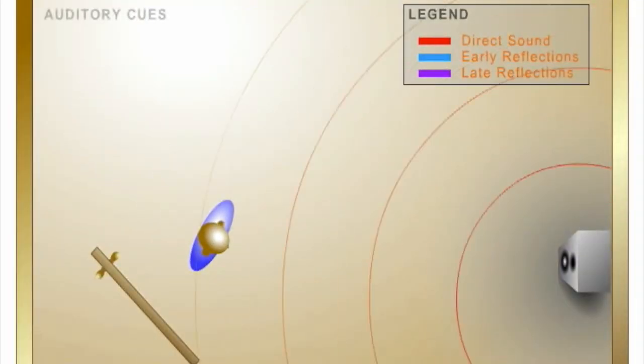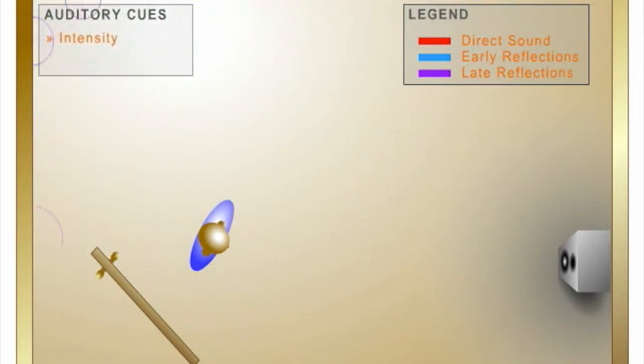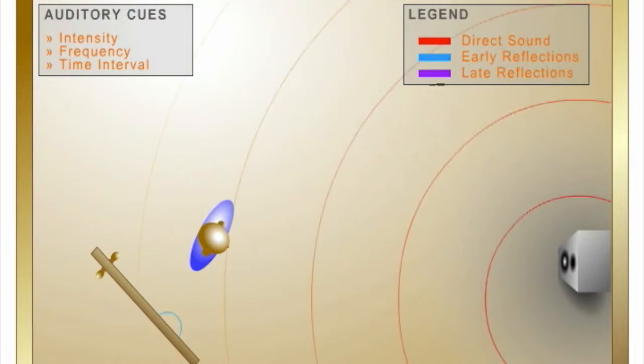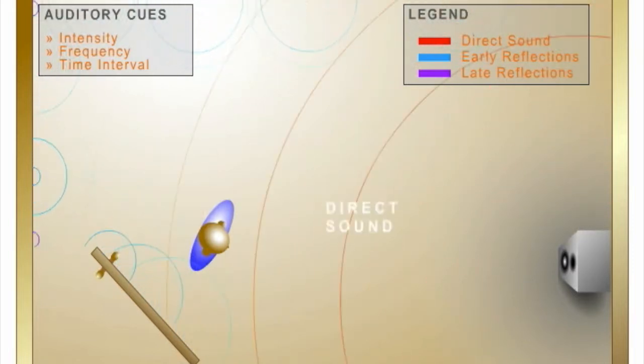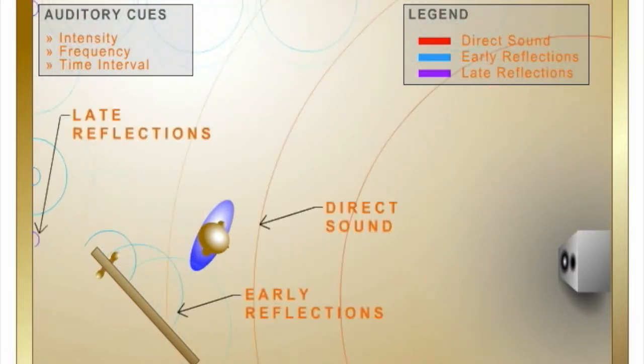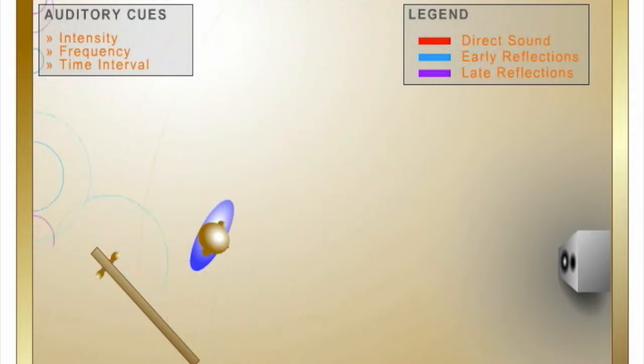Auditory cues for the perception of the size of a space include sound intensity or loudness, frequency, and time arrival. The brain measures differences in time, energy, and frequency between direct sound and the early and late reflections of the sound to distinguish size.